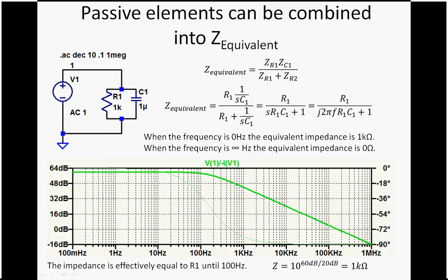So we can also combine passive elements into a Z equivalent. We used to be able to find R equivalent, C equivalent, and L equivalent, but if we had them in a circuit, we had no way of adding them together. Well, we can do that with impedance.